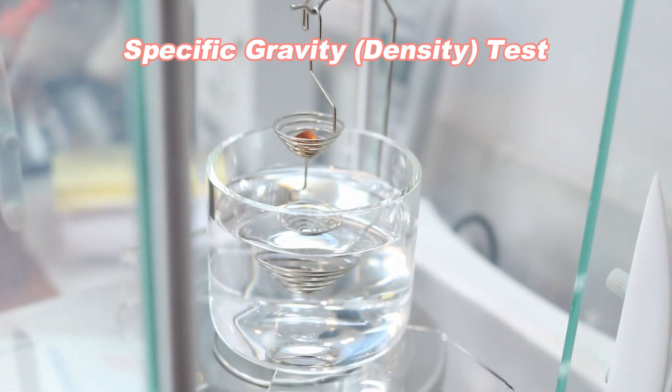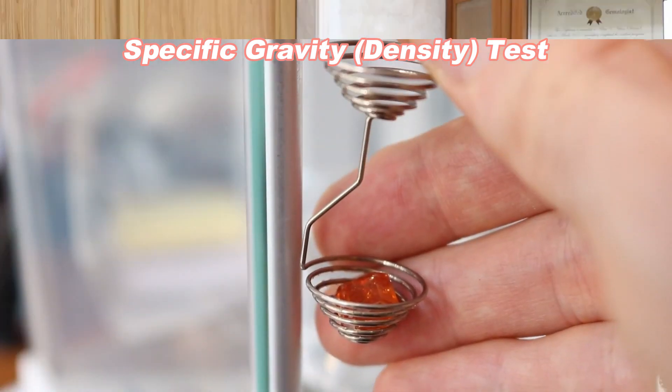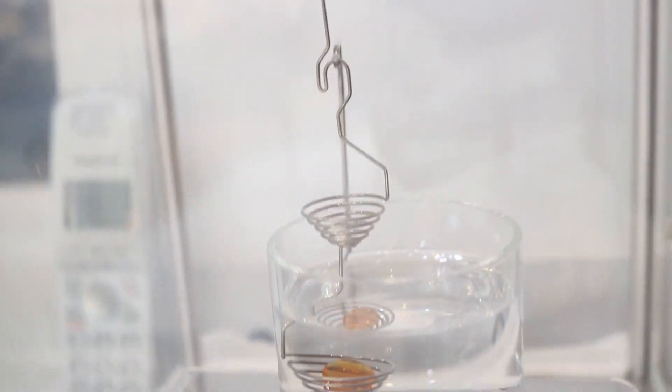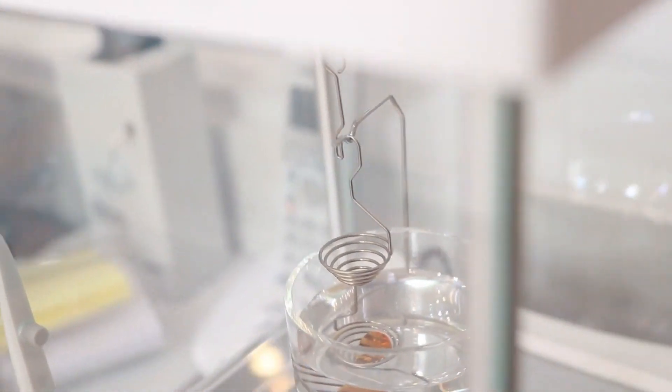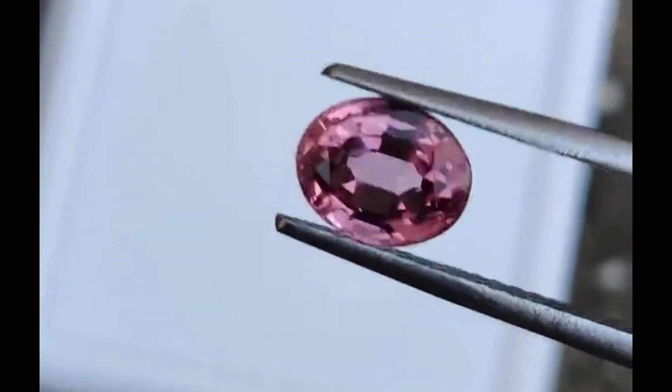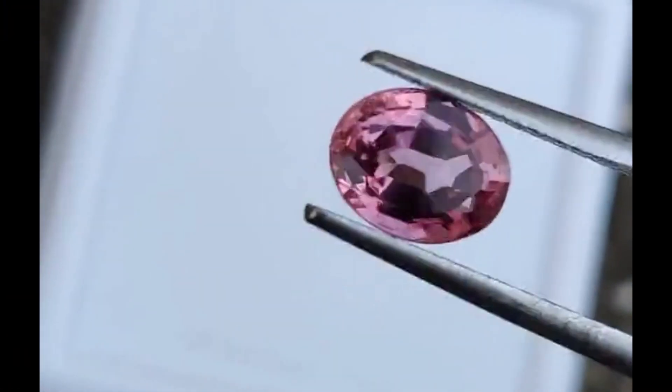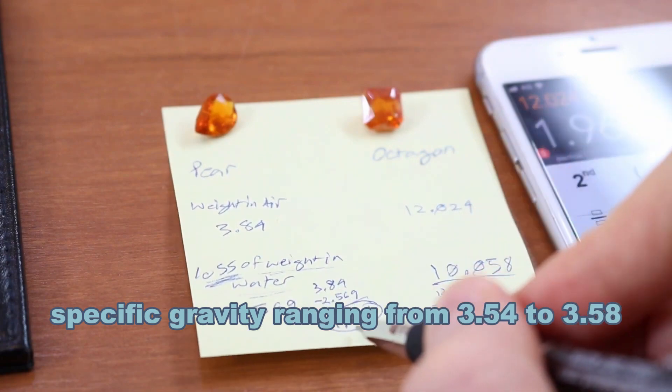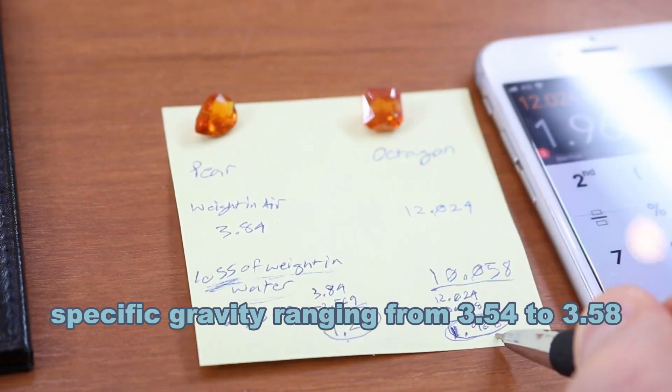Specific Gravity (Density) Test: Calculate the specific gravity of the rough spinel using a simple water displacement method. Weigh the spinel in air and then in water to determine its density. Spinel typically has a specific gravity ranging from 3.54 to 3.58.